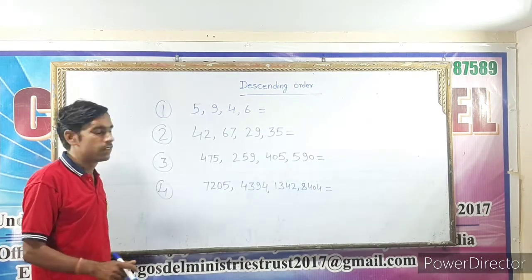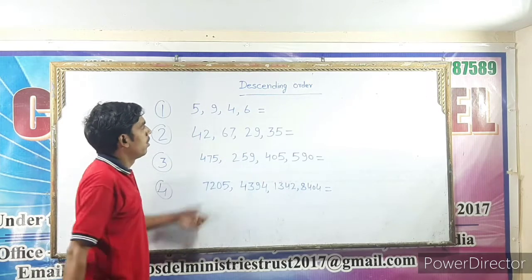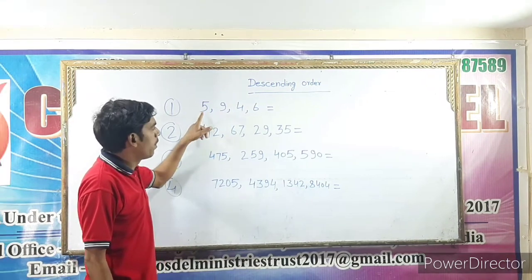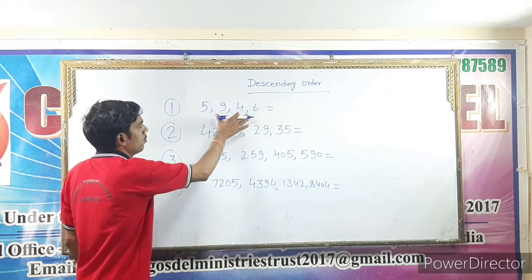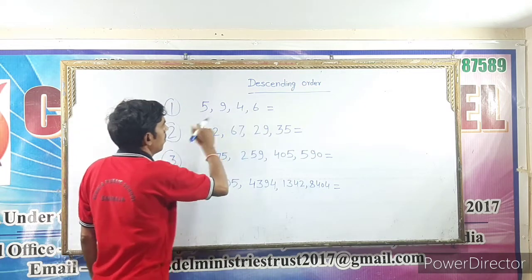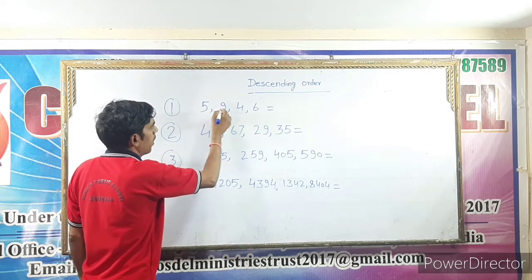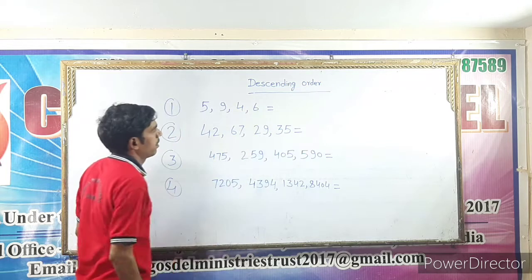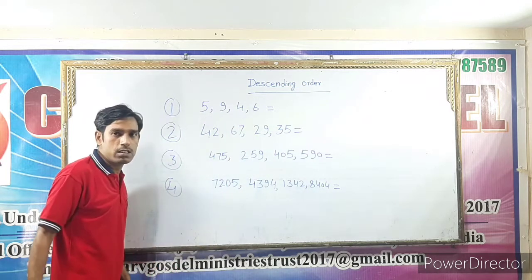So first, we learn 1-digit numbers in descending order. For example, we have 4 numbers: 5, 9, 4, 6.